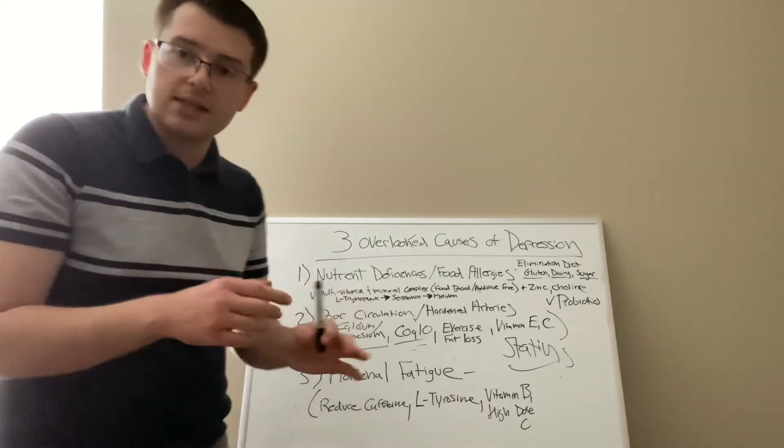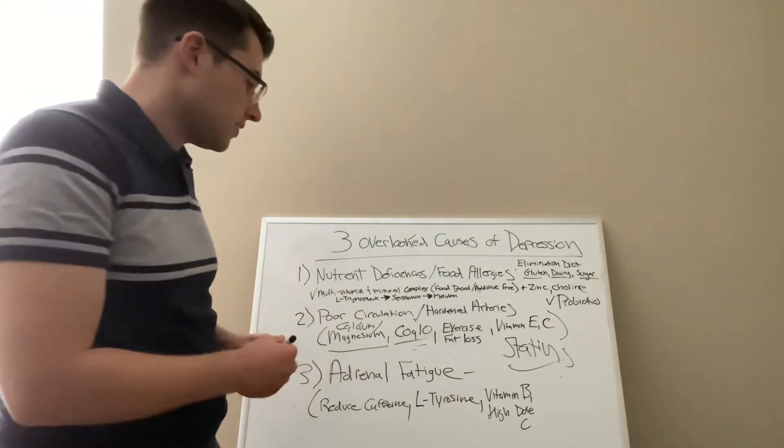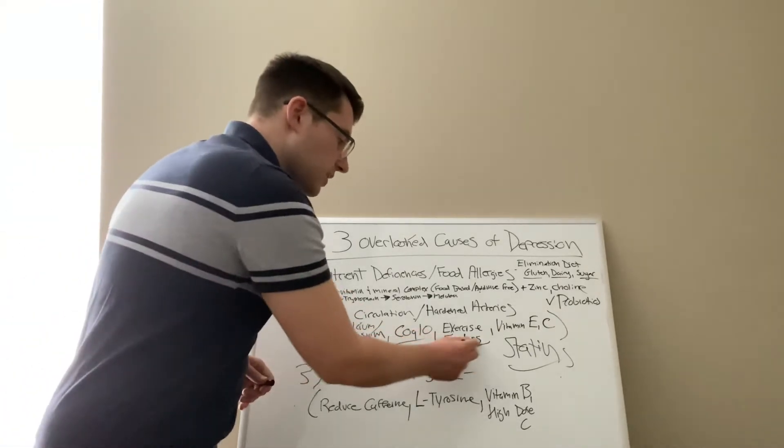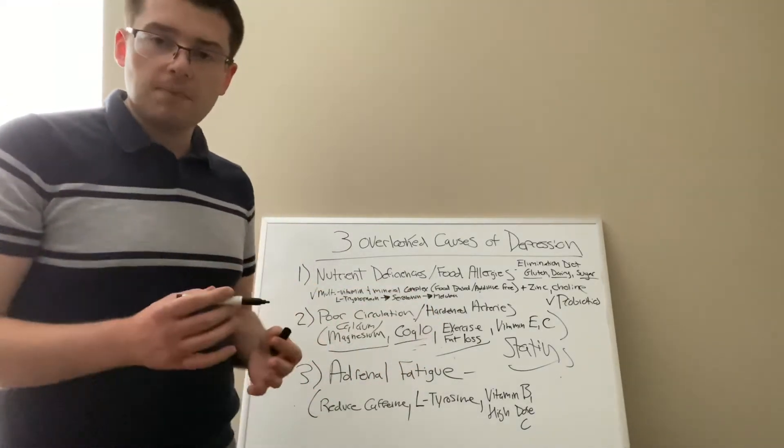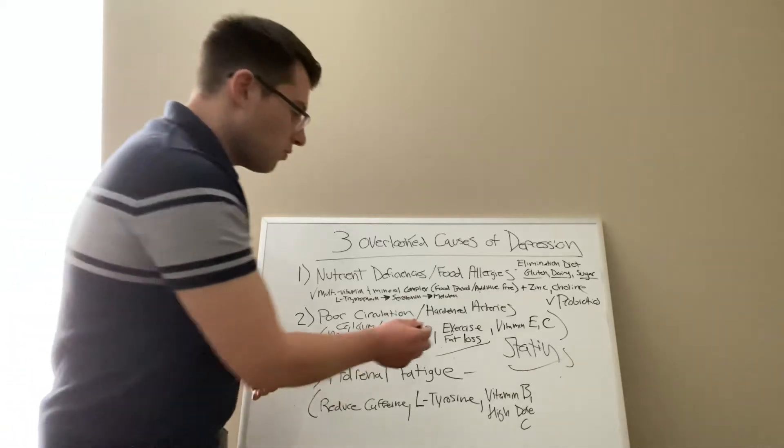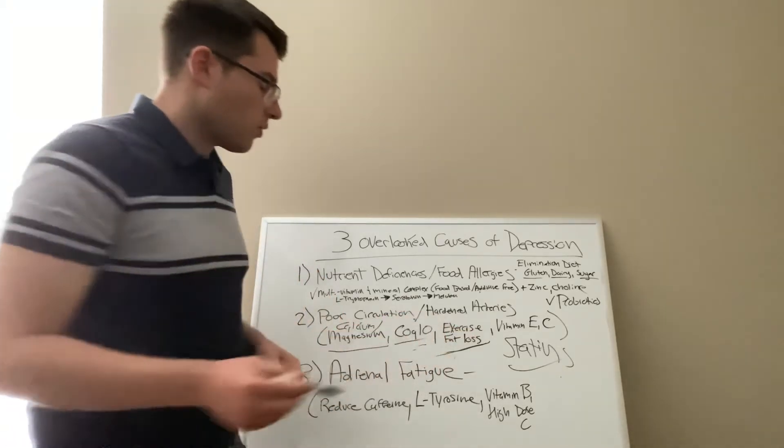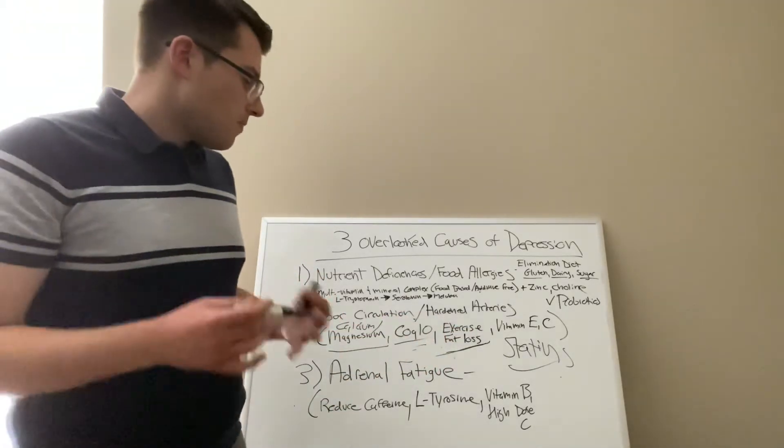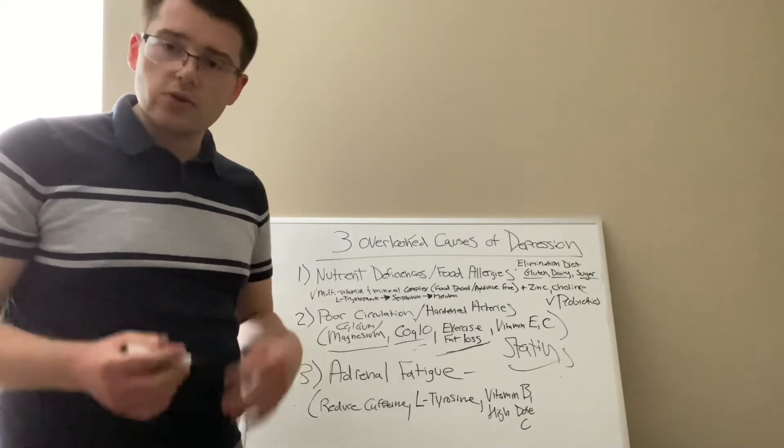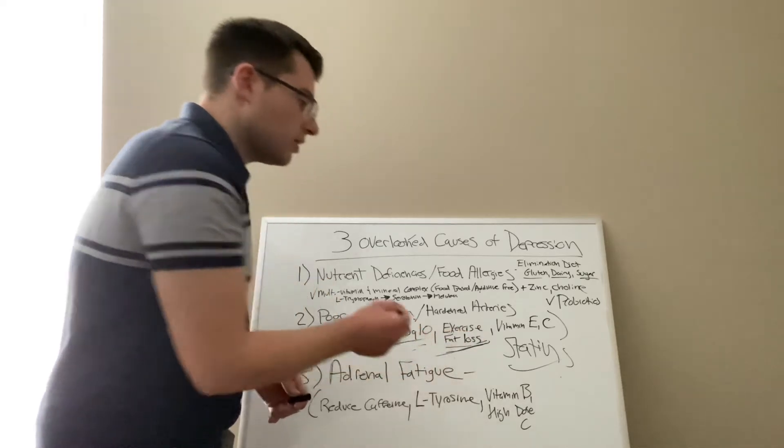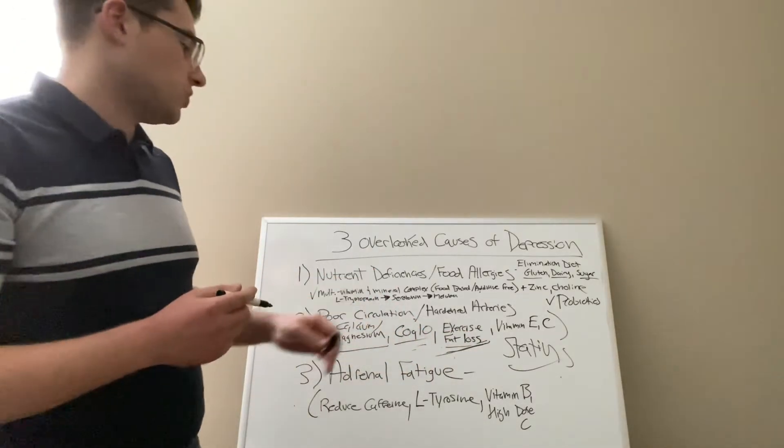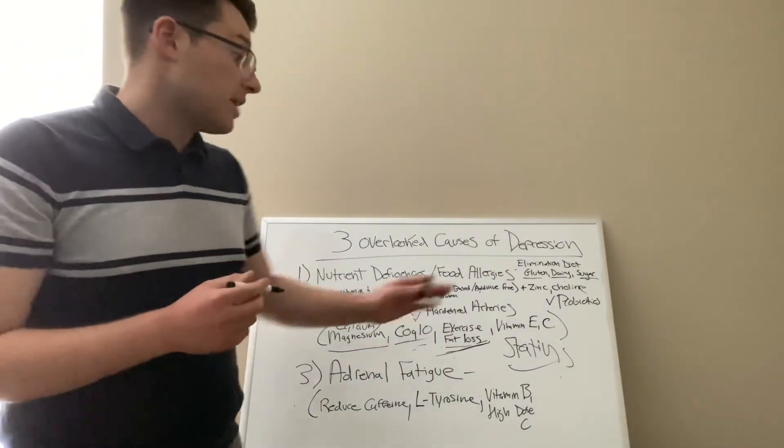So if the calcium doesn't deposit in the arteries, you want it to be balanced. Oh, this is big too. Fat loss and exercise. You want to be moving daily, and you want to make sure that you're not too overweight, because fat pretty much just means toxic overload. So you're going to have a lot of toxins in your body, and that's going to make your circulation go much faster.